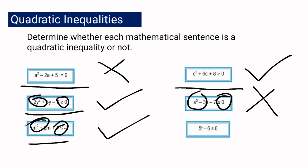The last one: 5d minus 6 is less than or equal to 0. It is not a quadratic inequality even though it uses an inequality symbol. This is in the first degree, so it is a linear inequality and not a quadratic inequality. I hope you get it.